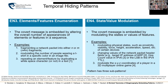The element features enumeration pattern works by embedding the covert message by altering the overall number of appearances of elements or features — counting their number in some sequence. For instance, we could fragment a packet into either N or M packets, modulate the number of people wearing a t-shirt of a specific color in an image file, or repeat an element by duplicating some whitespace character in a text.